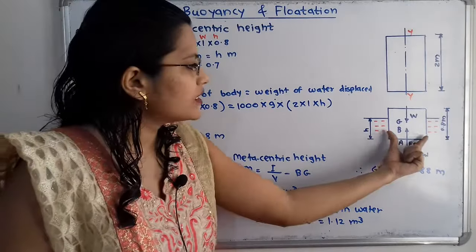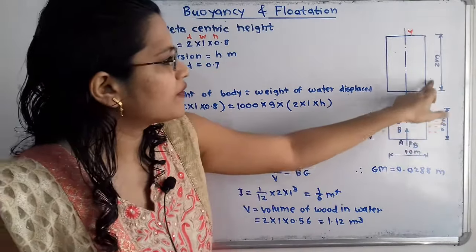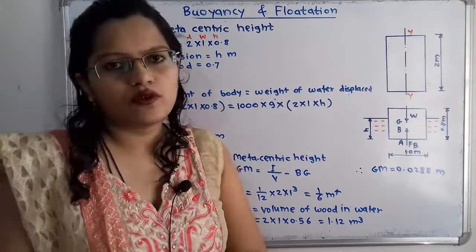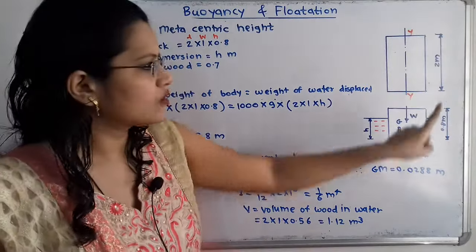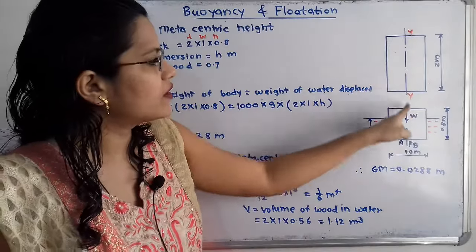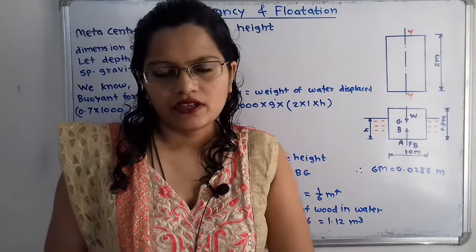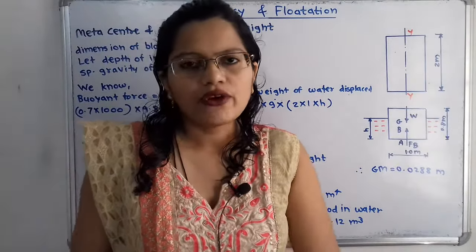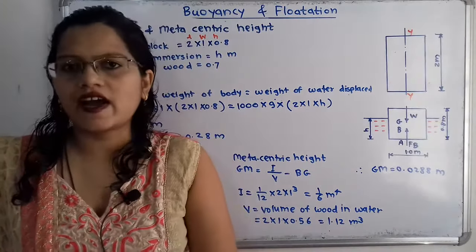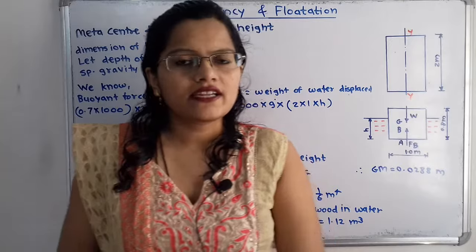Along the width, we draw another section showing the total length of the wooden block — 2 m — and show the vertical axis Y-Y. We now need to find the metacentric height.